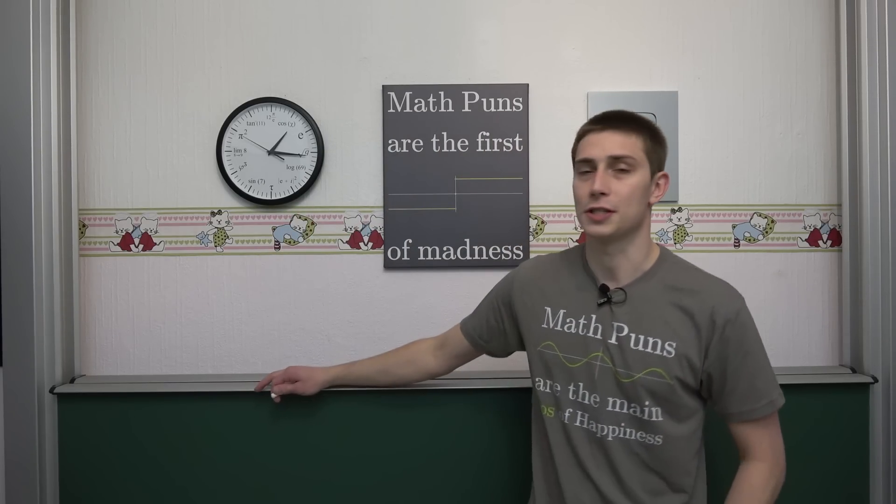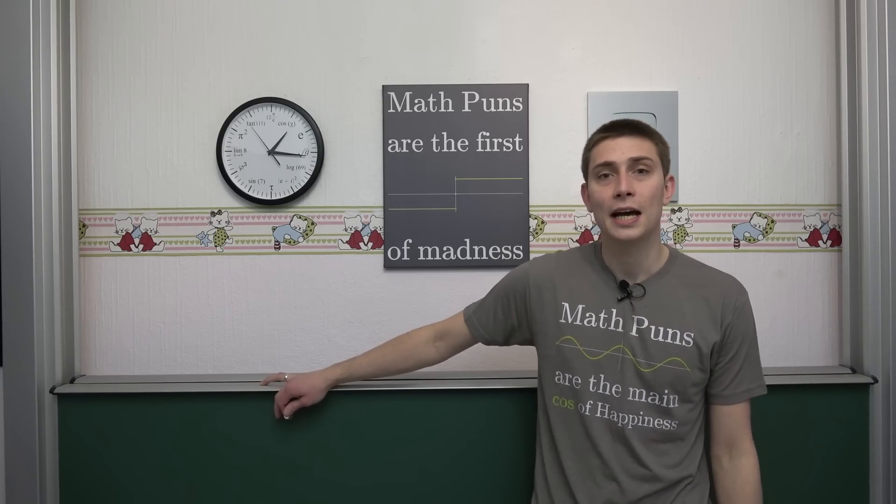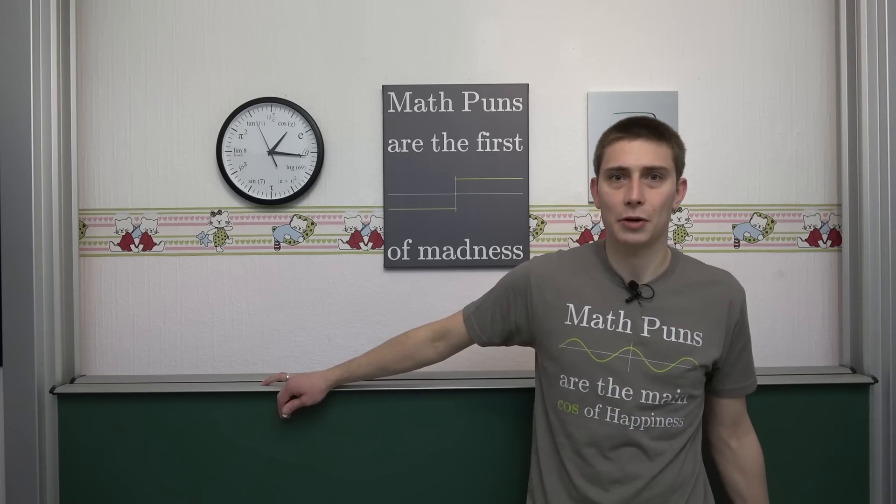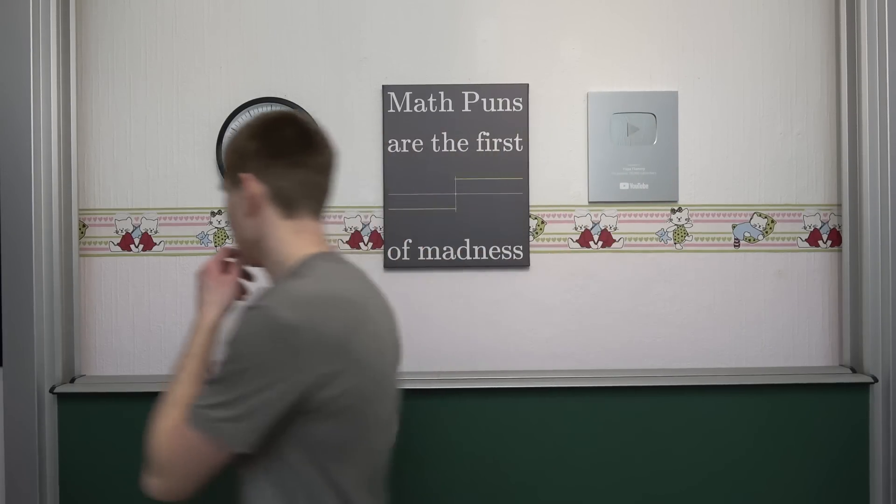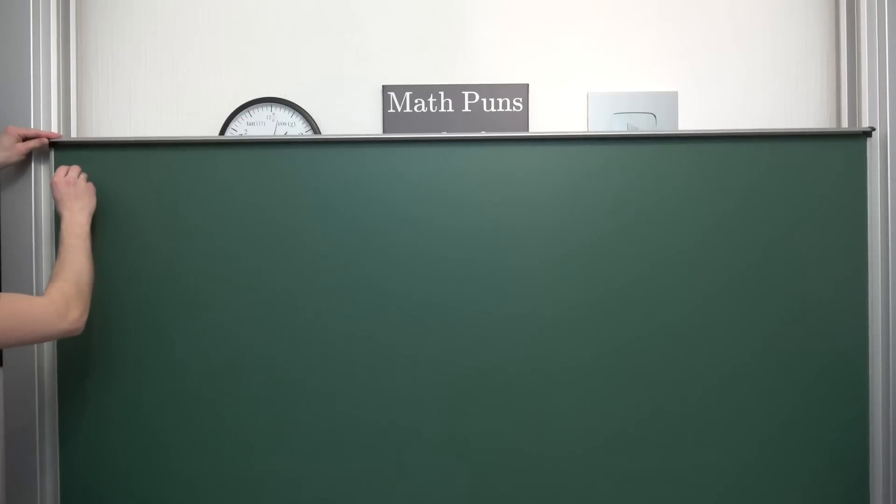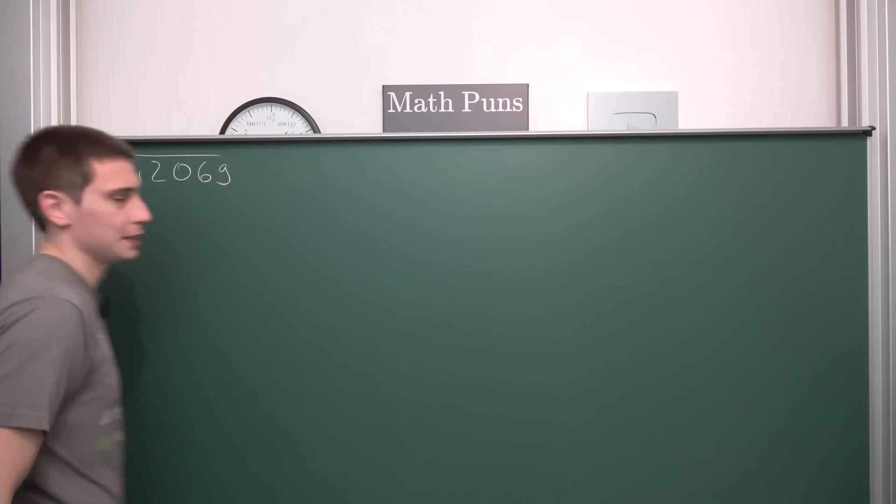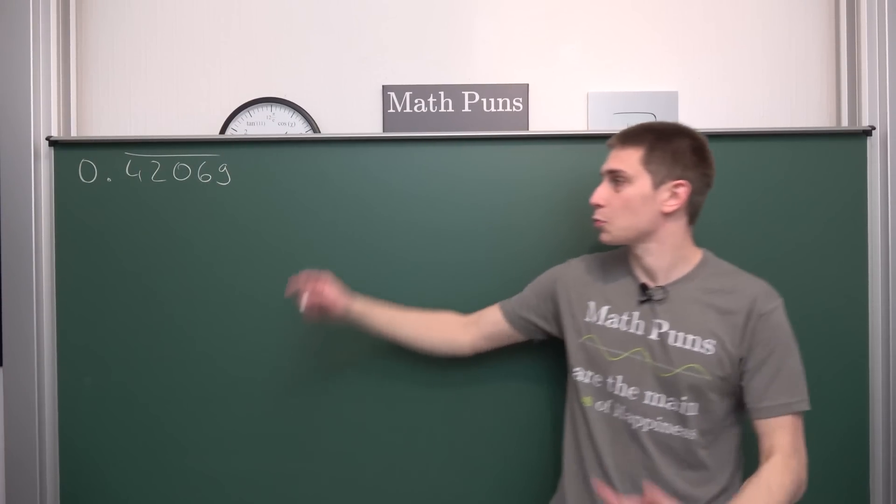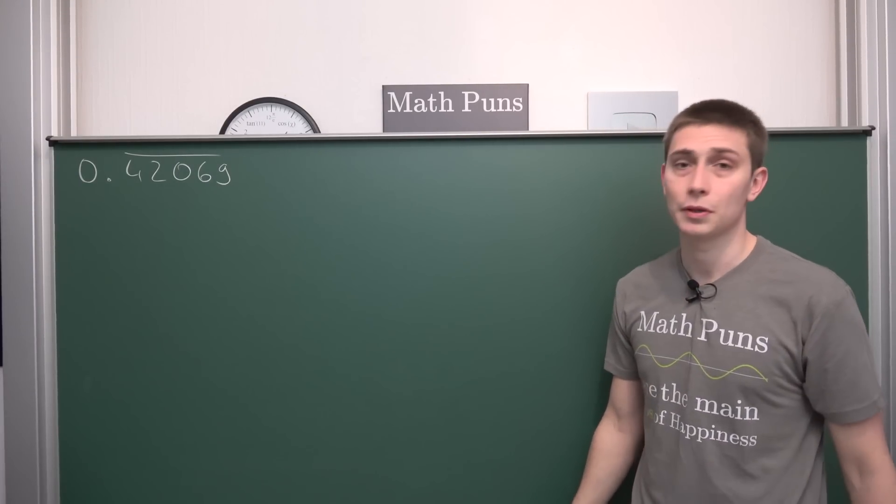Once again, just like before, links in the description, but this time using calculus. We are going to make use of calculus to derive the basic formula for expressing repeating decimals as fractions. We're going to take a look at a concrete example, and from this we can basically generalize.